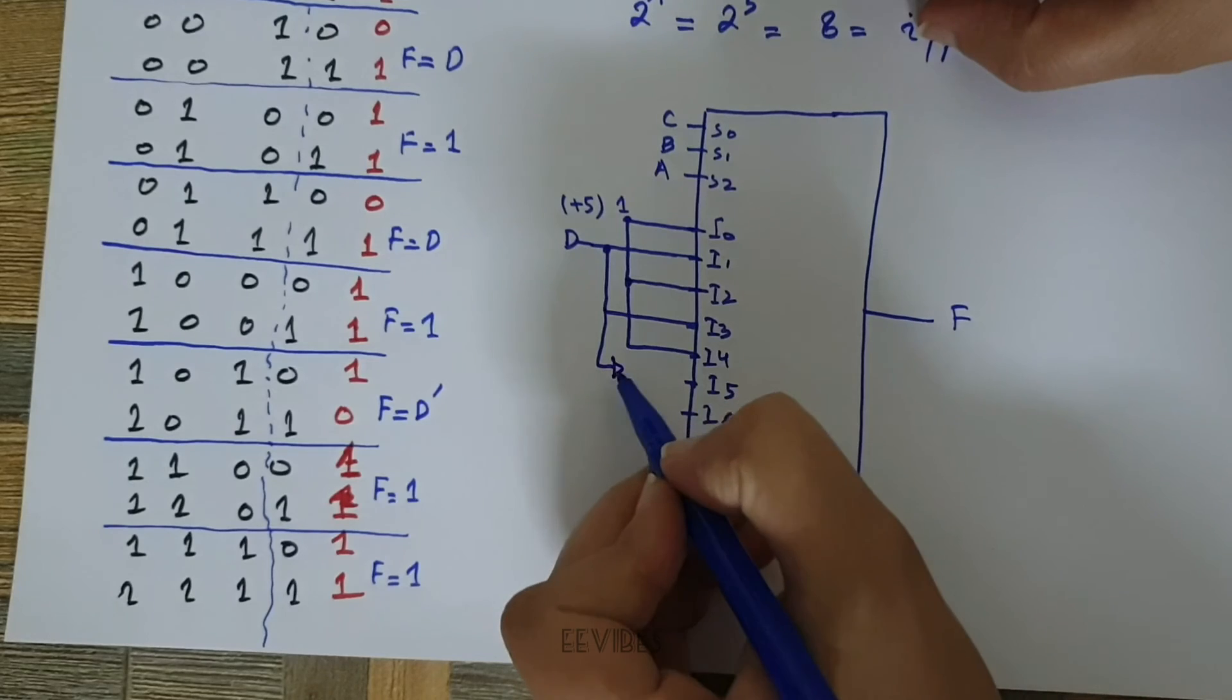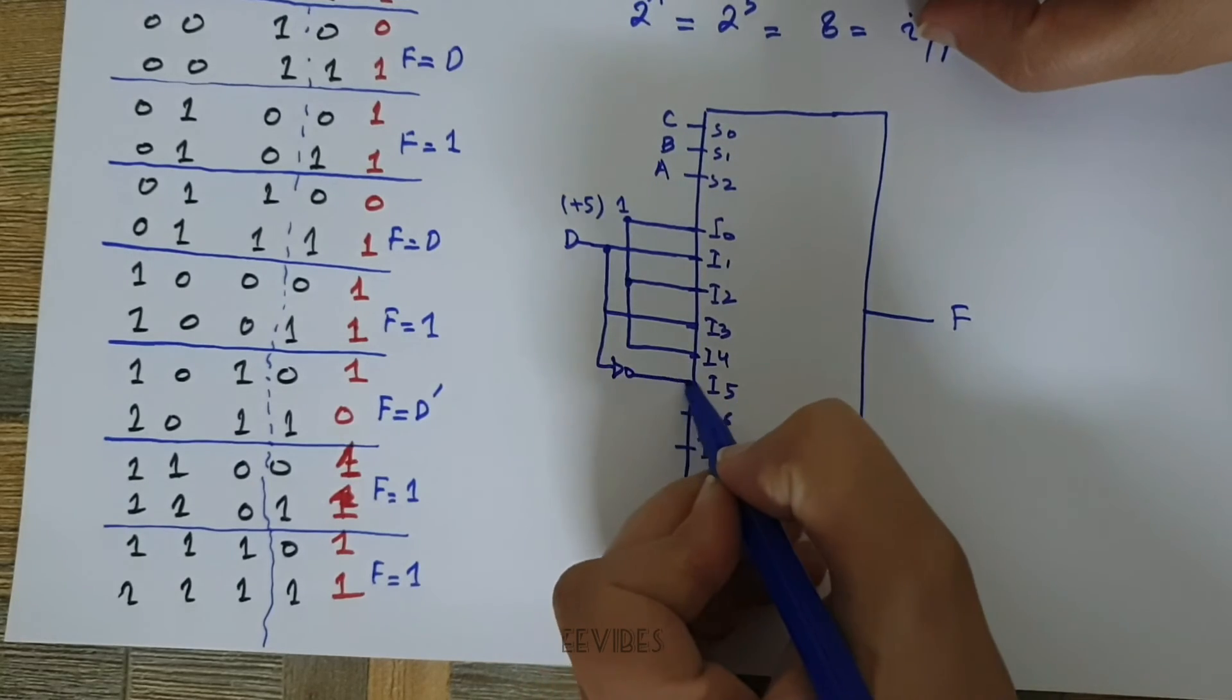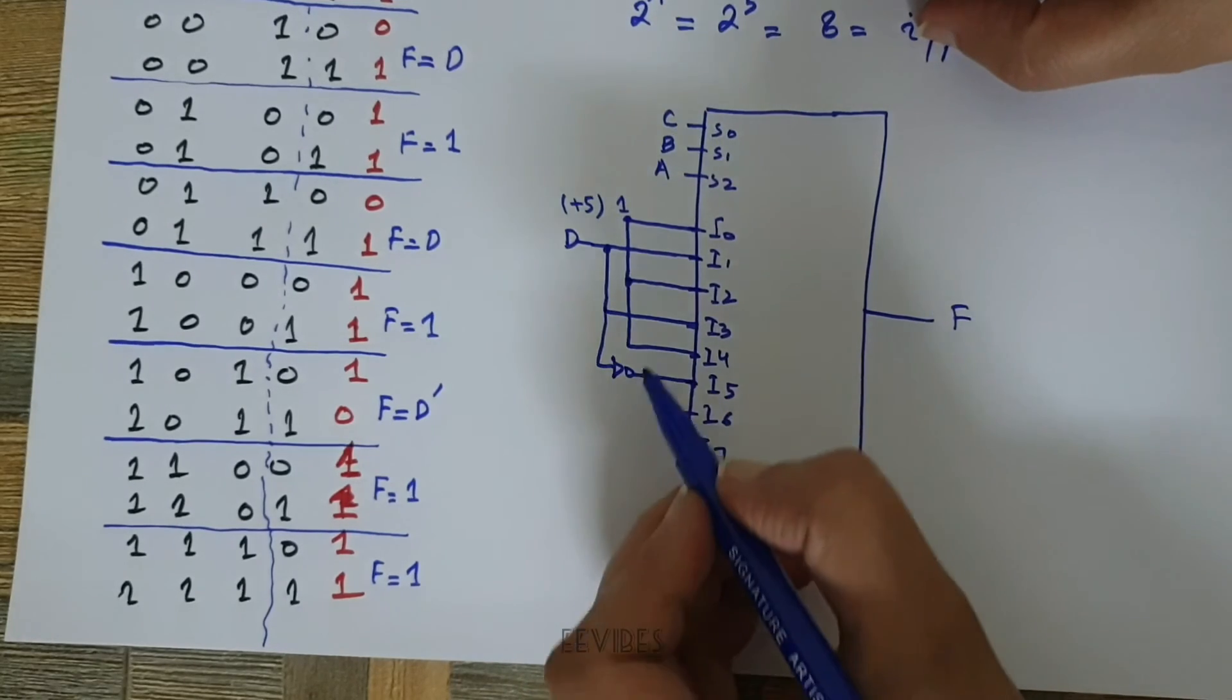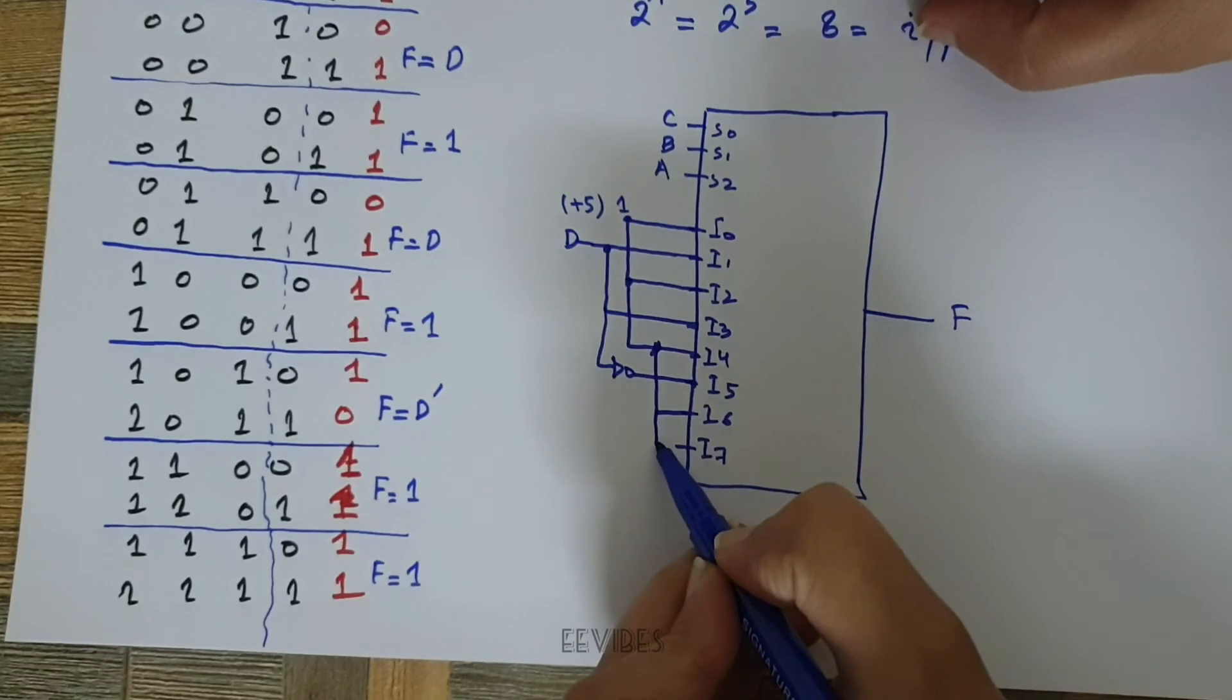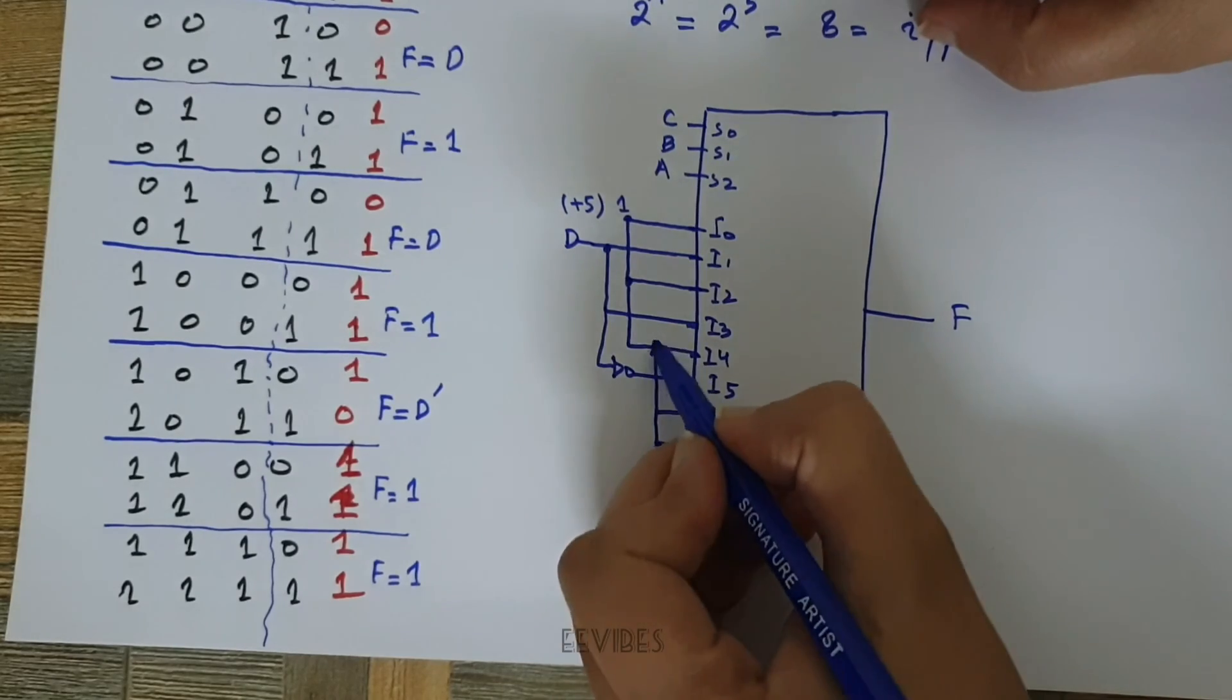take the inverted value of D and pass it or connect it with I5. And for the next two select line combinations, F is equal to 1.